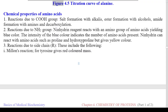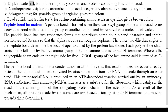Chemical Properties of Amino Acids: 1. Reactions due to COOH group: salt formation with alkalis, ester formation with alcohols, amide formation with amines, and decarboxylation. 2. Reactions due to NH2 group: ninhydrin reagent reacts with the amino group of amino acids yielding a blue color; the intensity indicates the number of amino acids present. Ninhydrin can react with amino acids such as proline and hydroxyproline but gives a yellow color. 3. Reactions due to side chain (R): i) Millon's reaction for tyrosine gives a red colored mass; ii) Hopkins-Cole test for the indole ring of tryptophan; iii) Xanthoproteic test for aromatic amino acids — phenylalanine, tyrosine, and tryptophan; iv) Sakaguchi test for the guanido group of arginine gives red color; v) Lead sulfide test for sulfur-containing amino acids such as cysteine gives brown color.